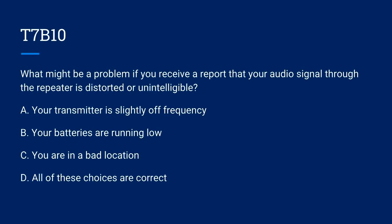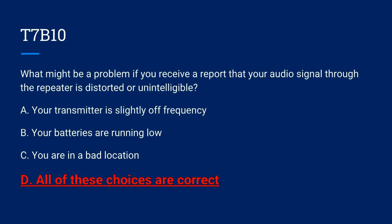T7B10. What might be the problem if you receive a report that your audio signal through a repeater is distorted or unintelligible? A. Your transmitter is slightly off frequency. B. Your batteries are running low. C. You are in a bad location. Or D. All of these choices are correct. The correct answer is D. All of these choices are correct.